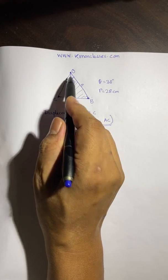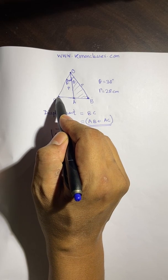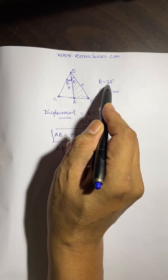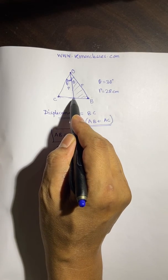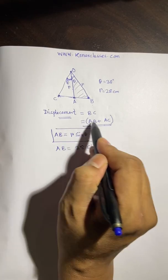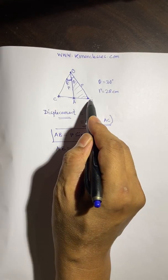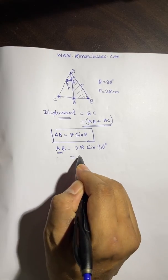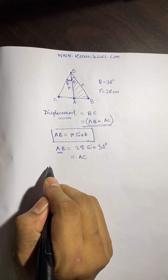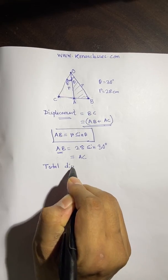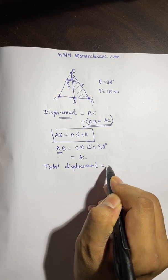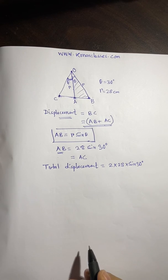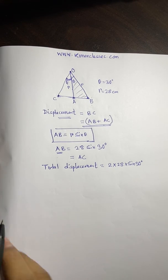Similarly, when the pendulum goes to point C on the other extreme, it makes the same angle theta of 30° with the vertical line. So AC also equals r·sin(theta), meaning AC equals AB. Therefore, the total displacement BC equals 2 × 28 × sin(30°).